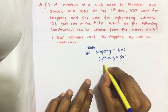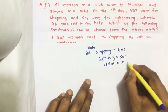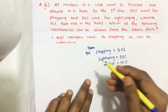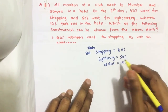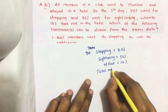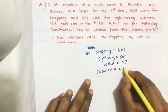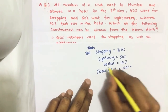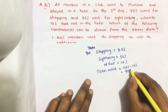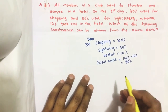Since 10% took rest, that means 90% of people were active. Active people = 100% minus 10% rest = 90%. So from these 90% active people,